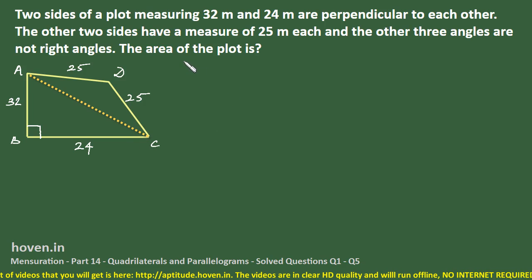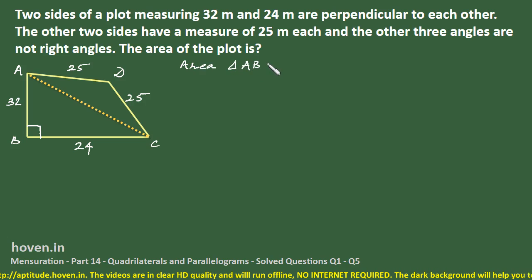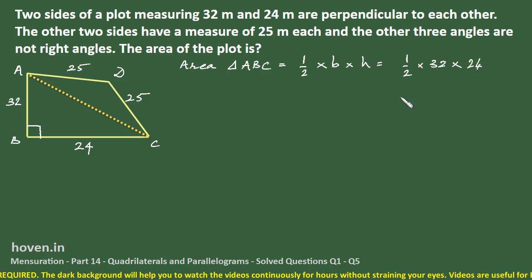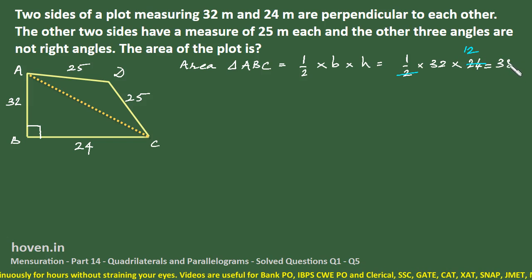We can say that area of triangle ABC is equal to half of base into height which is equal to half of 32 multiplied by 24, which is equal to, we can do some cancellation. This will go on 12 and 12 into 32 is 384. This is one thing that is available with me.